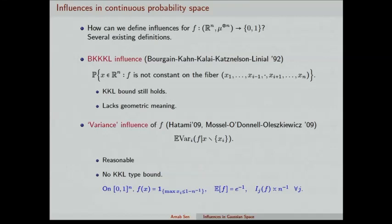This generalizes the definition of influence for the p-biased Bernoulli measure, and in this case they proved the KKL bound still holds. But in general, if you talk about Gaussian spaces, this definition lacks a geometrical meaning — you can put part of the value of f on a set with arbitrarily small measure, and then the function will have a completely different set of influences. So this is probably not so natural in that case.